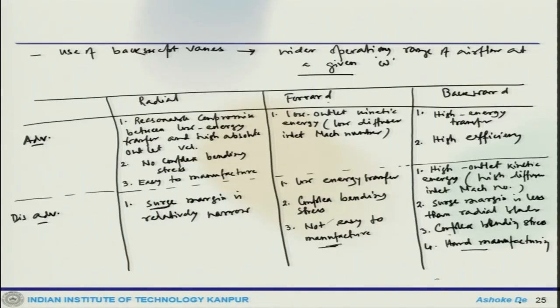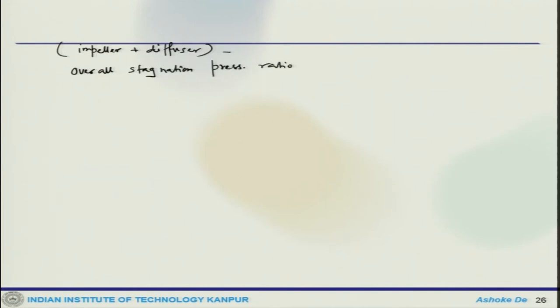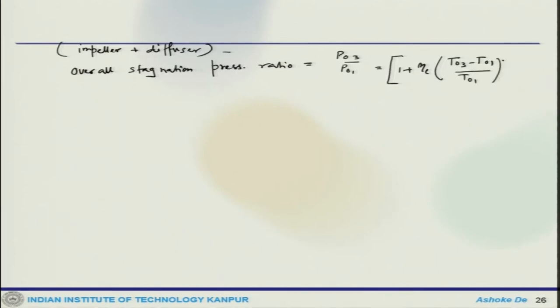We now consider the compressor impeller and diffuser together and analyze the system. The overall stagnation pressure ratio P03/P01 is given by: 1 plus eta_C times (T03 minus T01) divided by T01, all raised to the power gamma/(gamma minus 1).